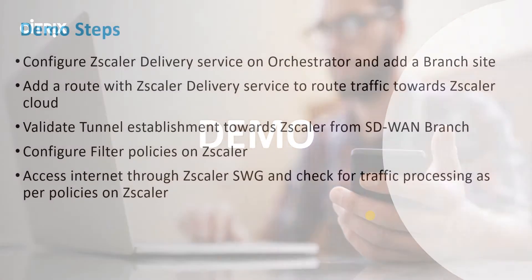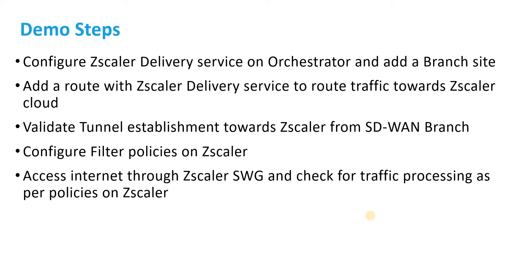Let's go through the demonstration. First, we will be configuring Zscaler Delivery Service on Orchestrator, and we will be adding a route on this particular branch site in order to route all the internet traffic through Zscaler Delivery Service. We will validate IPsec tunnel establishment from the branch device towards Zscaler Cloud, configure filter policies on Zscaler to block some categories, and verify that traffic is being redirected from the branch office towards the Secure Web Gateway.